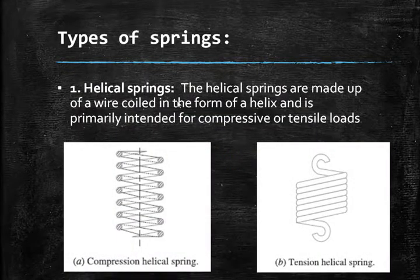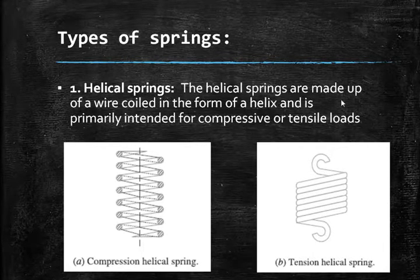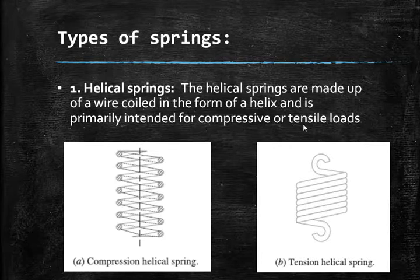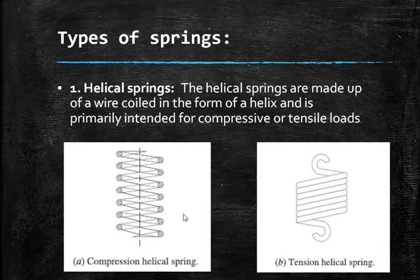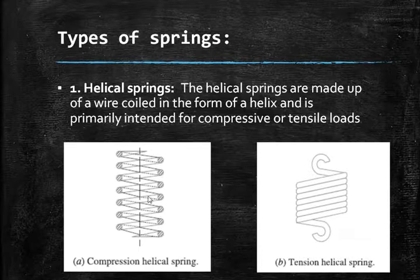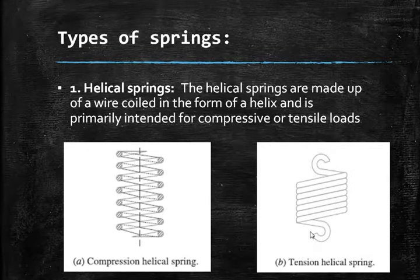The main type of spring is the helical spring. Helical springs are made of wire coiled in the form of a helix and are primarily intended for compressive or tensile loads. They are of two types: compressive helical springs, used to absorb compressive loads, and tensile helical springs, used in tension applications.